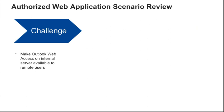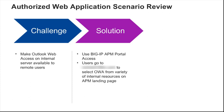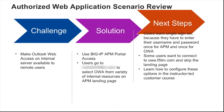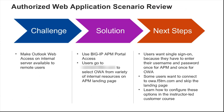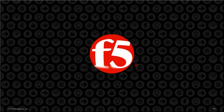To review, the fictional company needed to make Outlook Web Access available to remote users that may not have had access to the VPN. The solution was to use BigIP APM portal access and have users use the existing virtual server and select OWA from the landing page. Moving forward, users want single sign-on because they have to enter their username and password once for APM and once for OWA. Also, some users want to connect to a different virtual server, skip the landing page, and go straight into OWA. You can learn more about these options in the F5 Configuring BigIP APM instructor-led customer course. Thank you for taking this WBT. Please be sure to check out the other WBTs in the Getting Started with BigIP series.